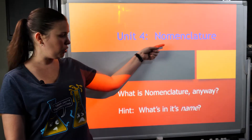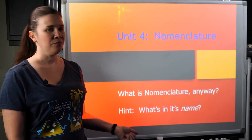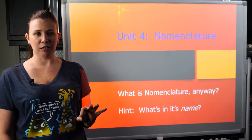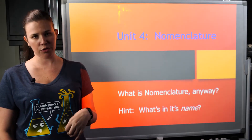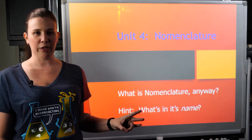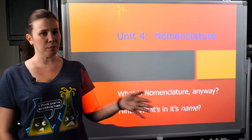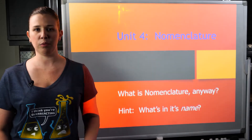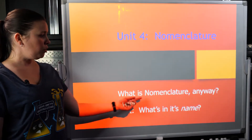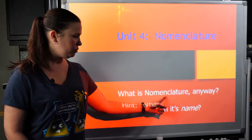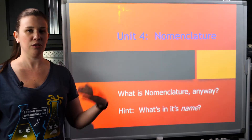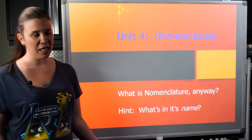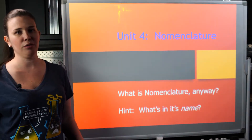Unit 4 is all about naming, or nomenclature. We're going to break this down into three separate sections: ionic naming, acids — which are a version of ionic naming — and then molecular naming. I'll let you know when we're switching gears so you can take a break if you need to. Nomenclature, by the way — 'nomen' — you might recognize from words like 'nombre' in different languages with the same root. It basically just means naming, so we're going to learn how to name molecules today.